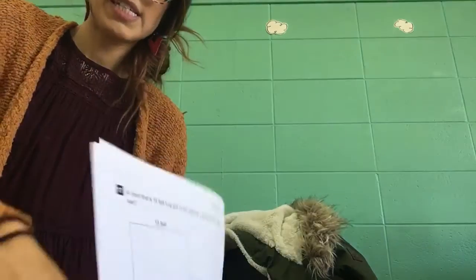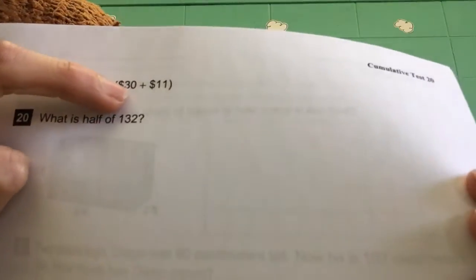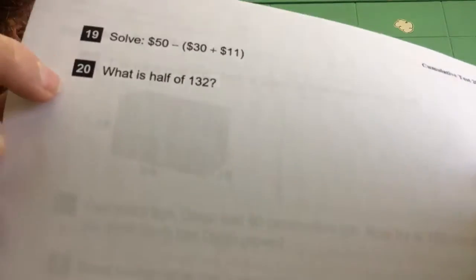Okay, two more. Number nineteen. Nineteen says solve fifty dollars minus parentheses thirty dollars plus eleven dollars. Don't forget to do what's in parentheses first.